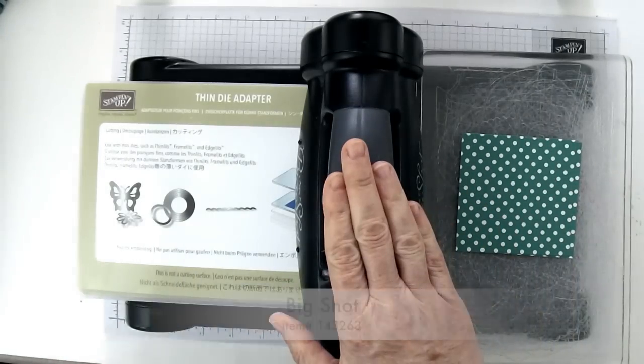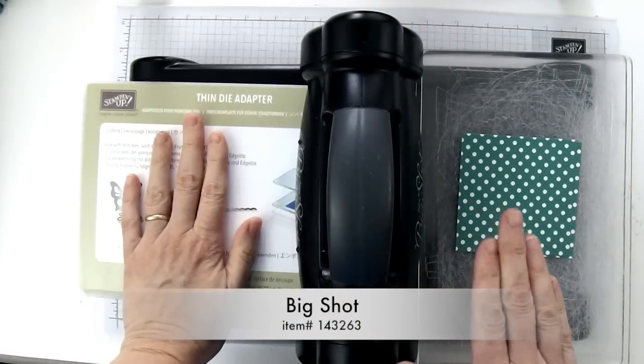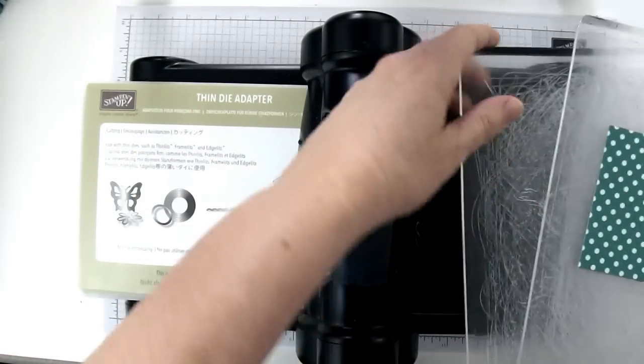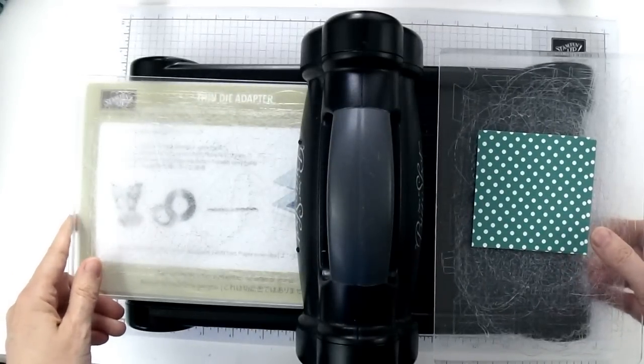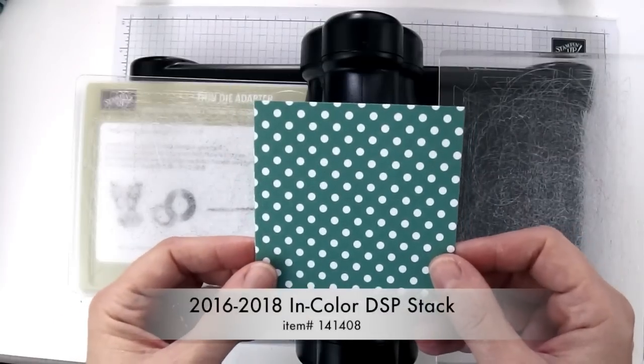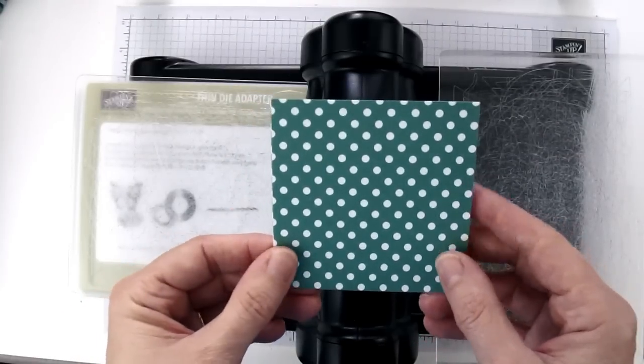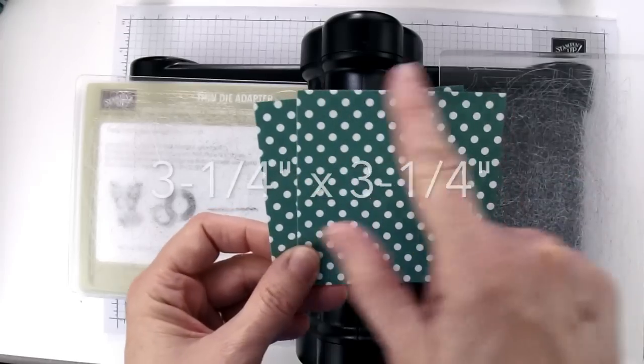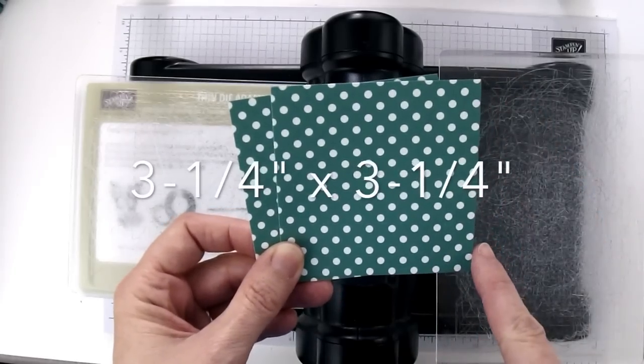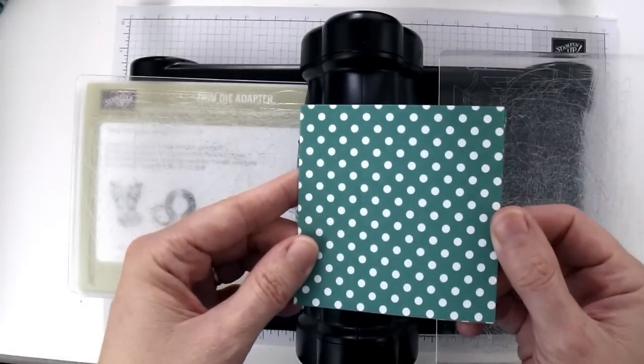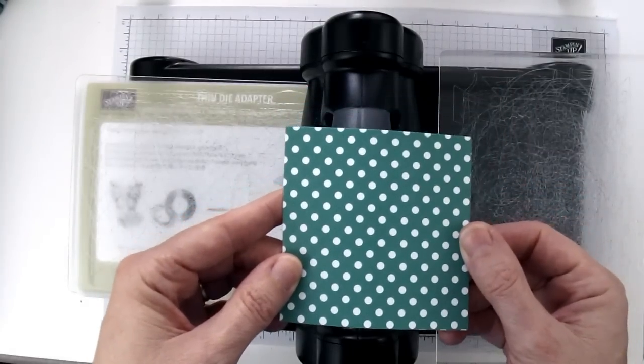So I've got my big shot here and I've got my platform already on here. I'm going to put down a cutting plate first and I have here some 2016-2018 in color paper and I've cut two squares of paper to three and a quarter inches by three and a quarter inches. Because this paper is thin enough I'll be able to cut two pieces at once.